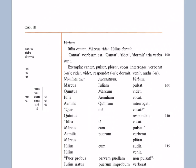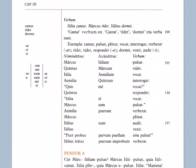Verbum — verb. Cantat is a verb, ridet is a verb, dormit is a verb — they have italicized all of those. Iulia cantat: Julia sings. Marcus ridet: Marcus laughs. Iulius dormit: Julius sleeps. Cantat, ridet, and dormit — tria verba sunt, three verbs. Examples: cantat, pulsat, plorat, vocat, interrogat, verberat — all ending in -at. Those are what we'll learn later as first conjugation type verbs, also called thematic vowel-A verbs.